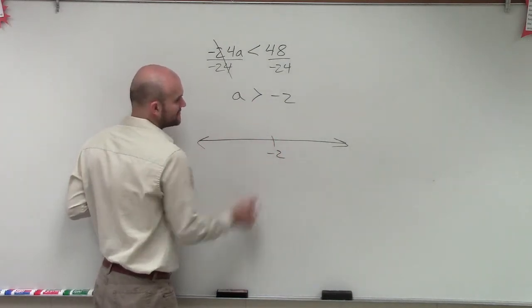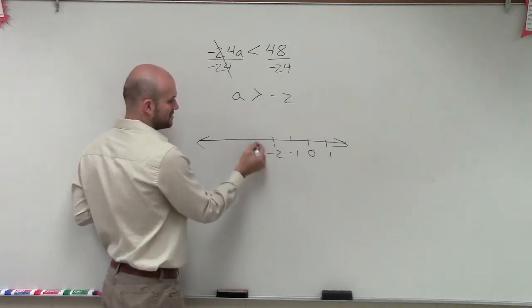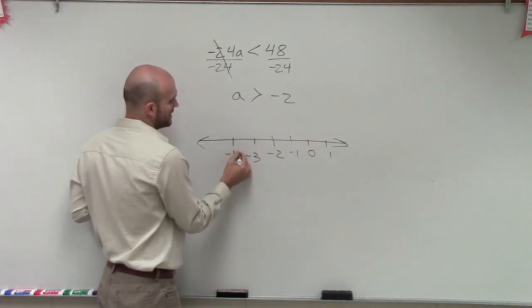So here I have negative 2. Then I go to negative 1, 0, 1. These are numbers in the positive direction. And then we'll keep on getting smaller in the negative direction.